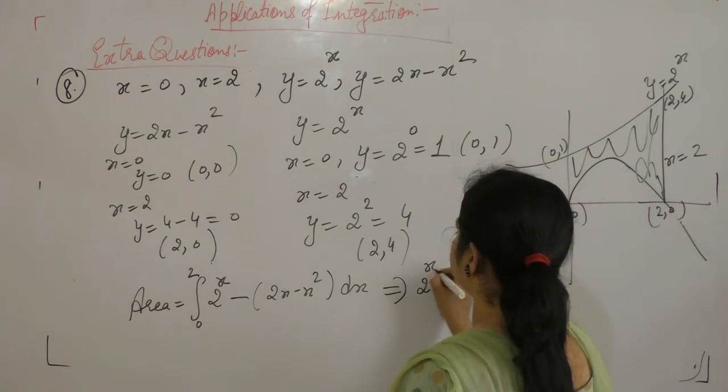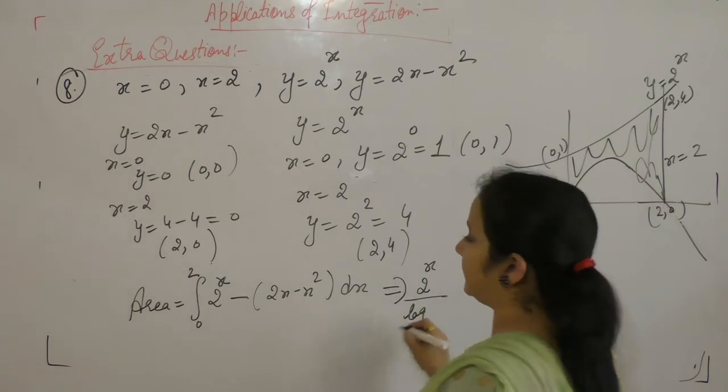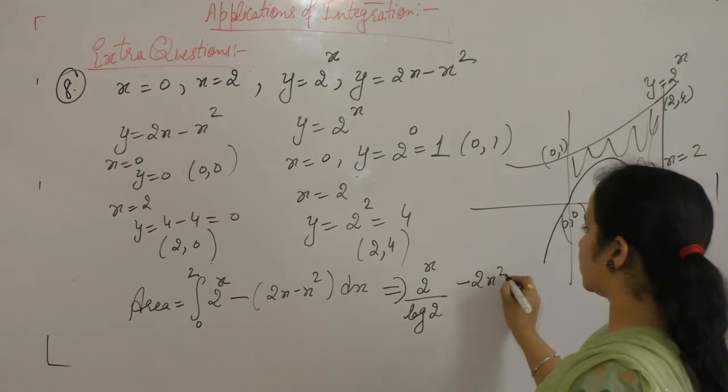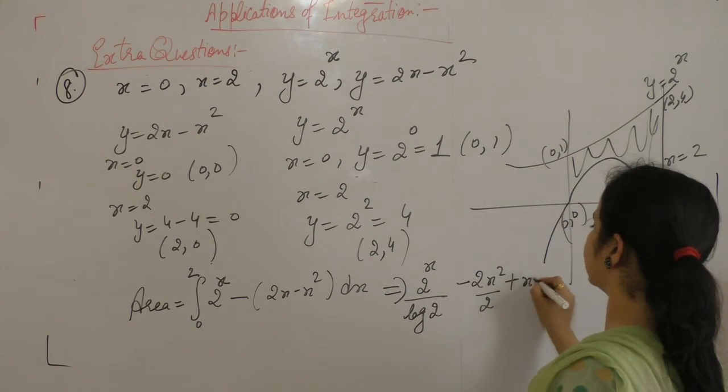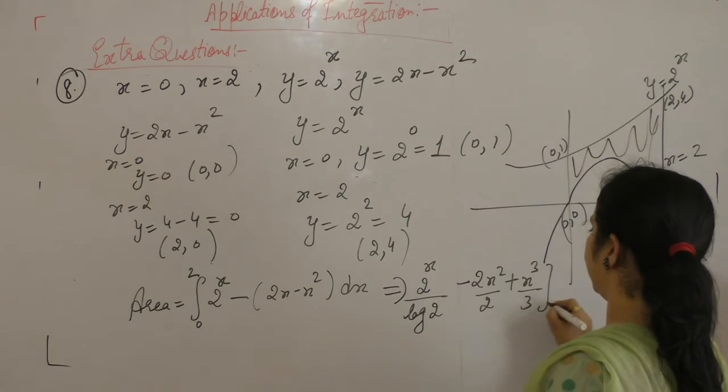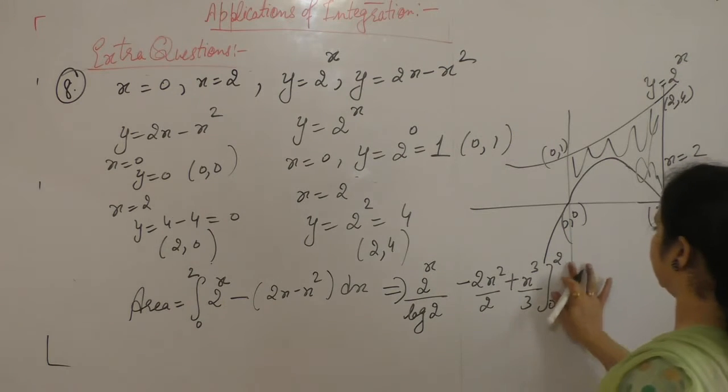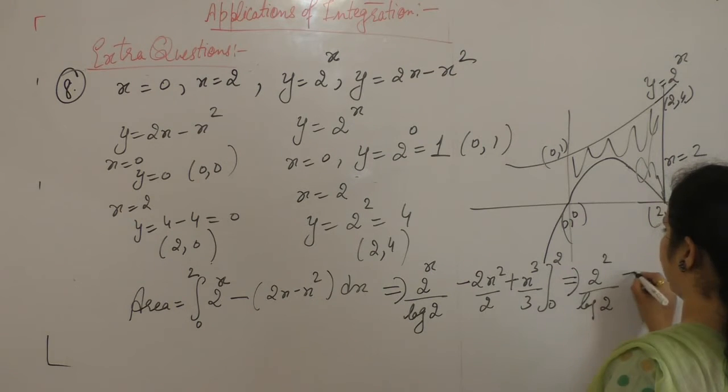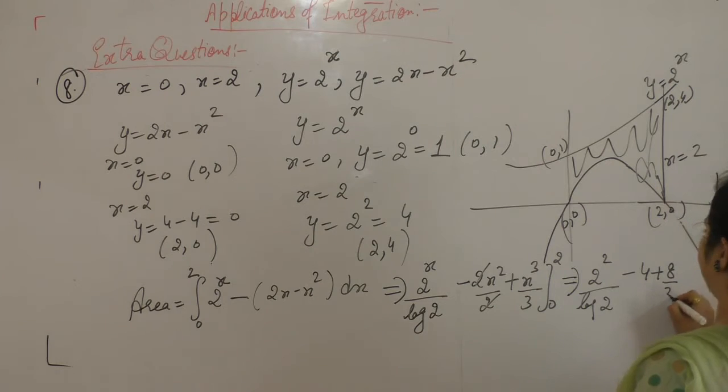a power x, integral of a power x is a power x upon log of a, minus 2x² by 2, minus minus plus integral of x² is x³ by 3. Now, area is 0 to 2: 2² is 4, 2 times 8 is 8 by 3, lower limit is 0, 2 power 0 upon log 2, minus 0.